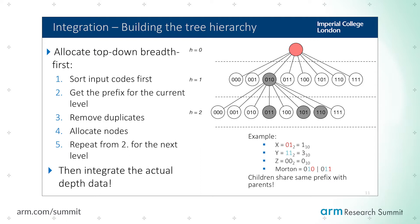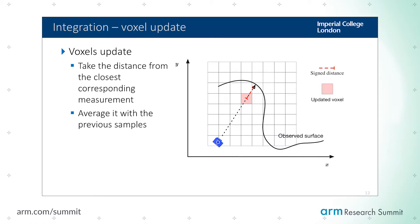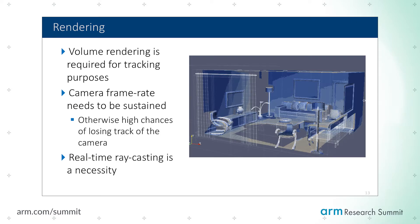Once the tree has been allocated, we collect all the voxels that have been allocated and update them. For each voxel we take the distance and do a moving average of the estimates. This is what it looks like — here is a render of a living room and this is what the reconstruction looks like.